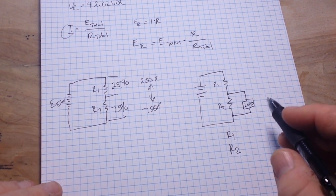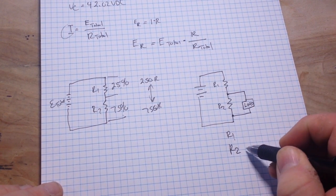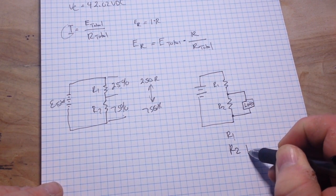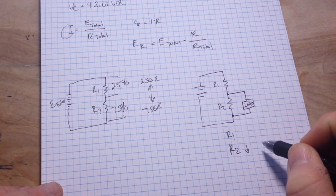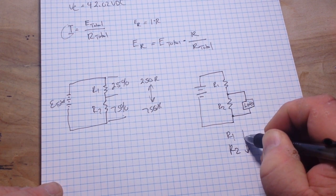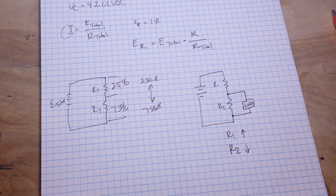Alright, no algebra, no mathematics needed here. Just a simple understanding of what will happen. The voltage across R2 will sag. And the voltage across R1 will increase.